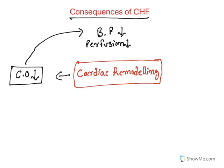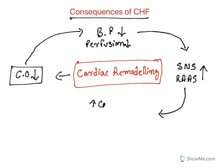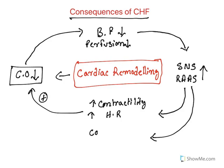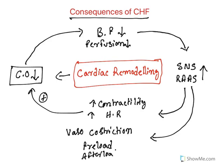Reduction in BP and decreased perfusion will activate the sympathetic nervous system as well as the renin-angiotensin-aldosterone system. Sympathetic nervous system activation results in increased cardiac contractility — the inotropic effect — as well as increased heart rate, known as the chronotropic effect. Both factors act to increase cardiac output, trying to re-establish it. Renin-angiotensin-aldosterone activation results in severe vasoconstriction; angiotensin 2 is a potent vasoconstrictor. This severe vasoconstriction also increases preload and afterload, which is very detrimental to cardiac health and causes major mortality.